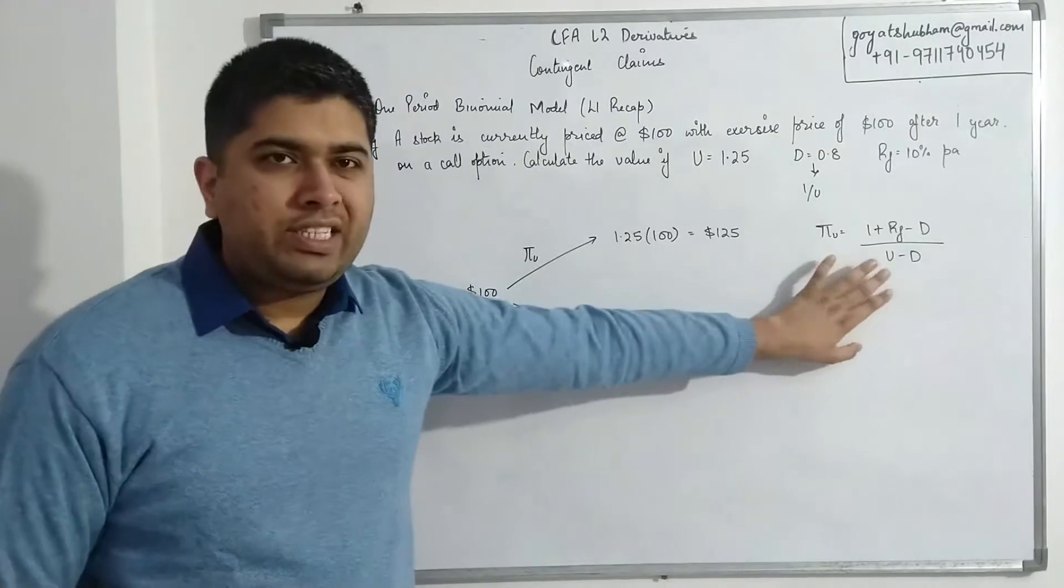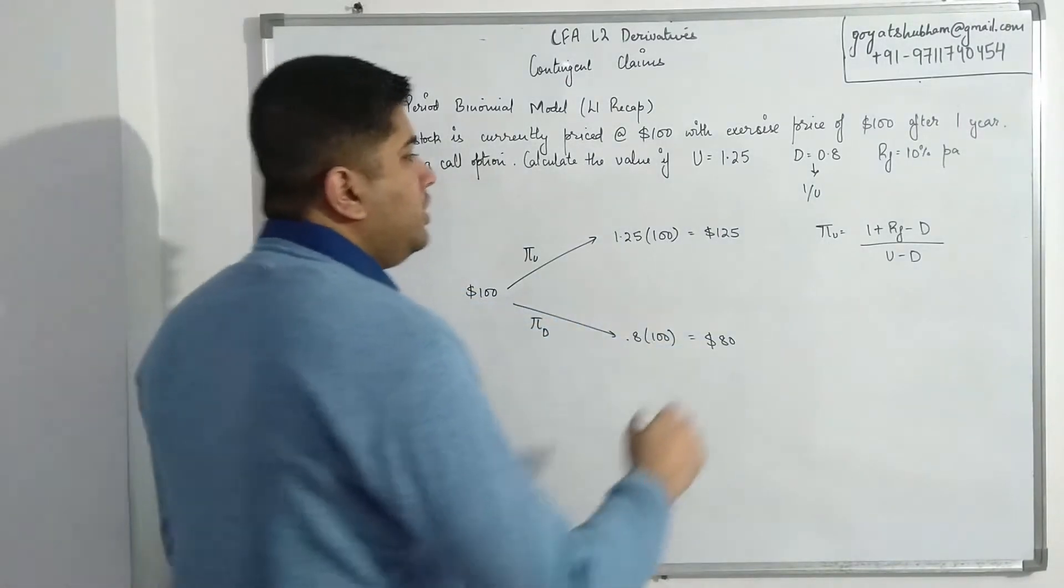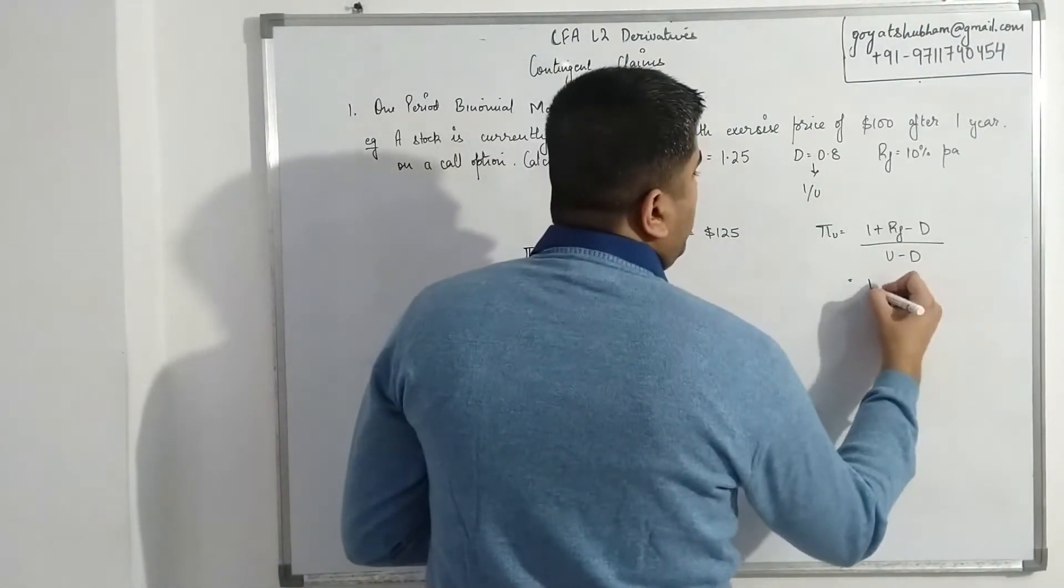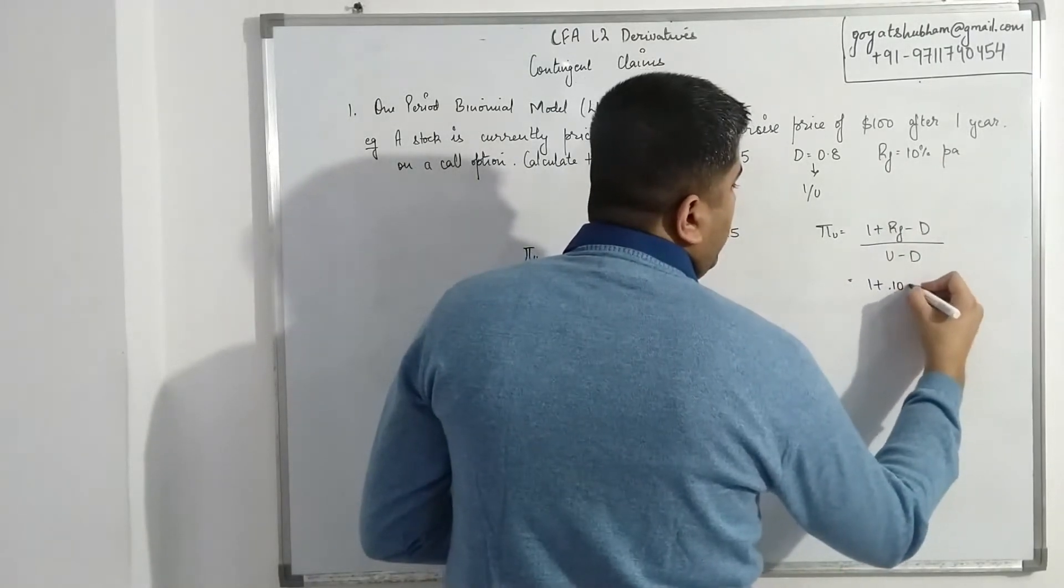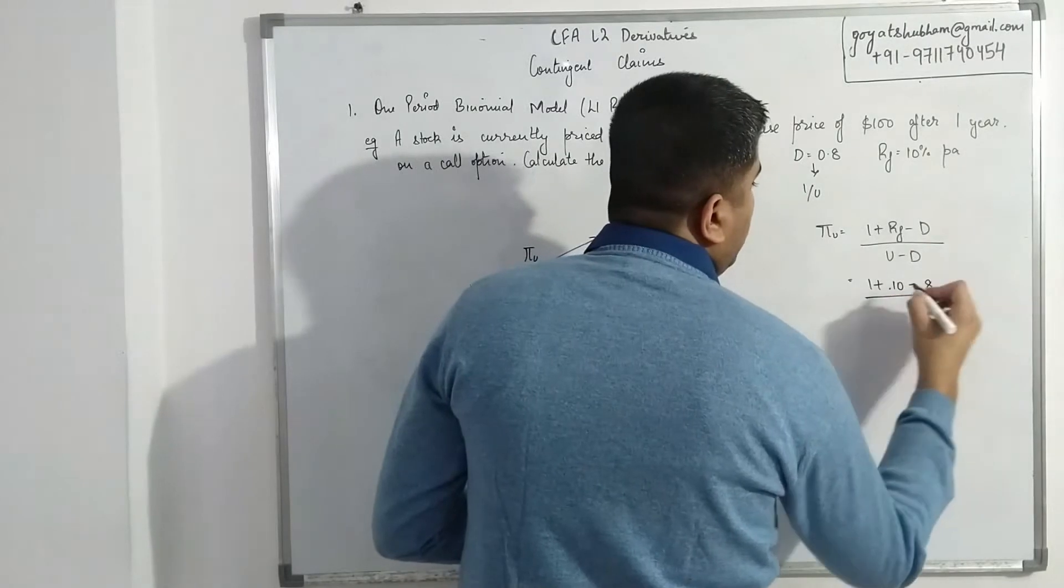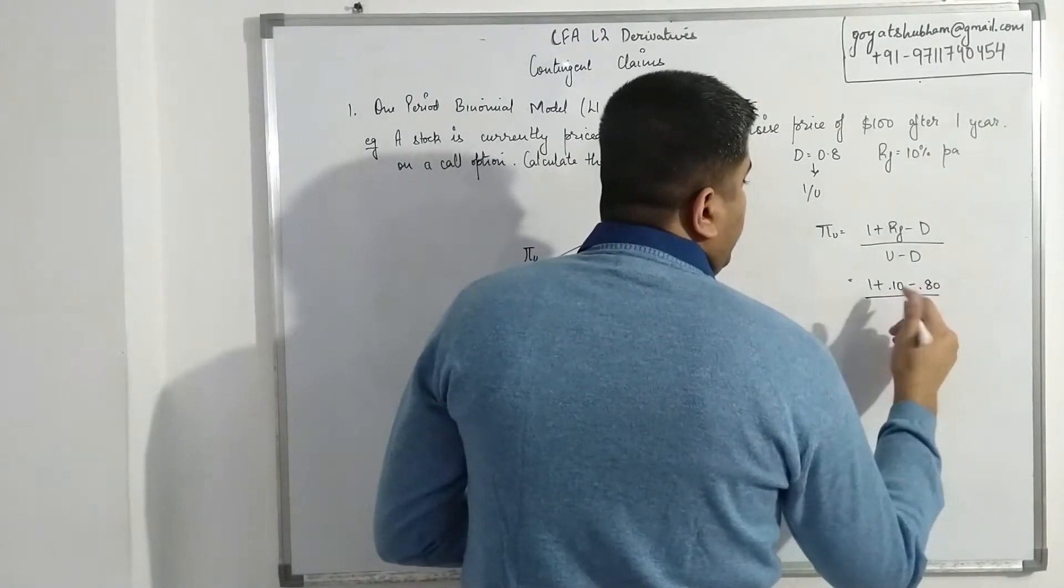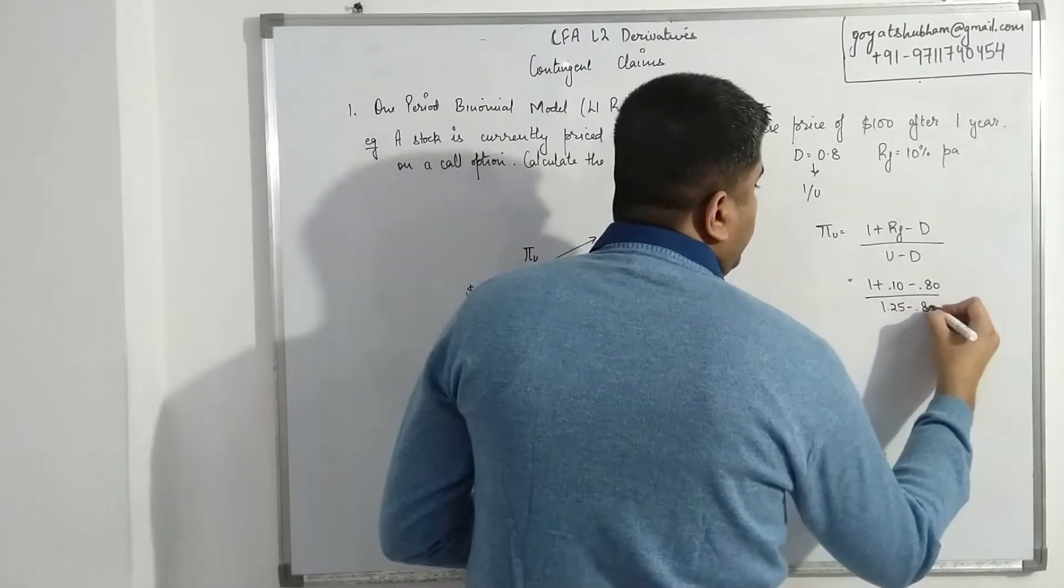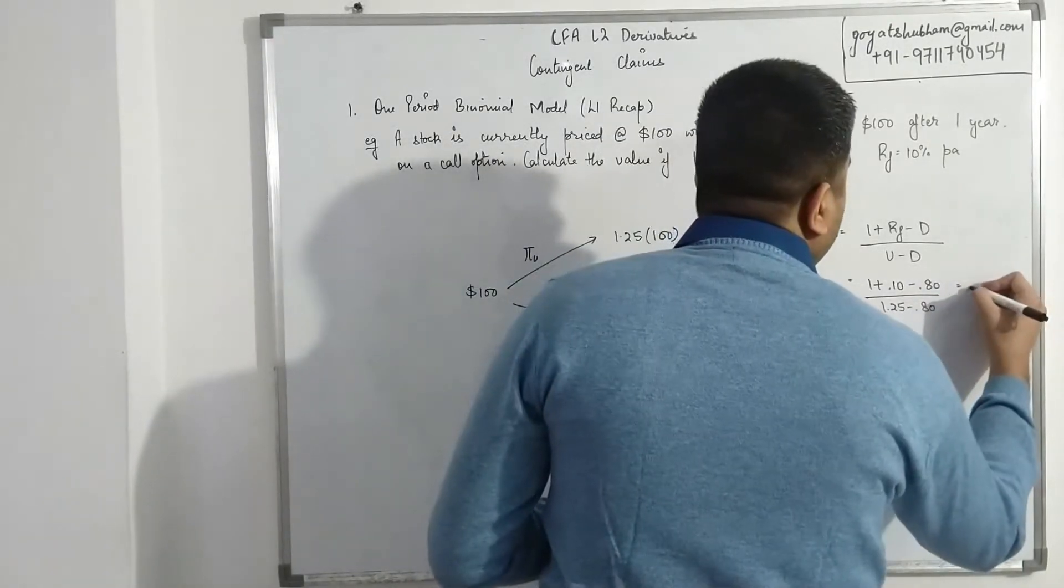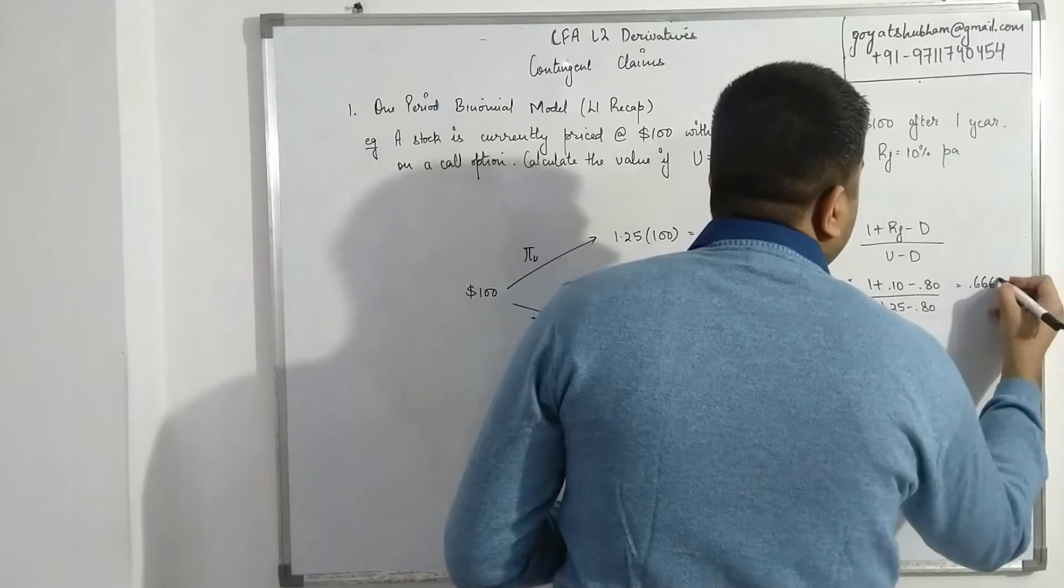Same formula from your Level 1 itself. All we have to do is just plug in all the values. So 1 plus risk-free rate as 10 percent, so 0.10 minus 0.8, divided by 1.25 minus 0.80. This will come out as 0.6667.